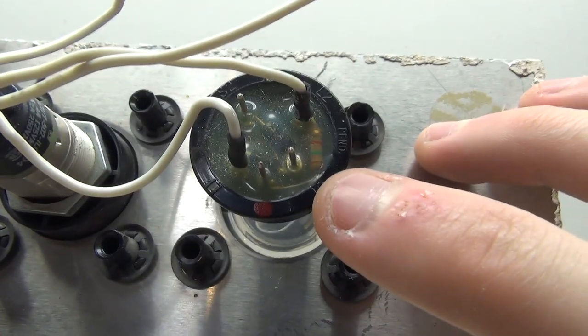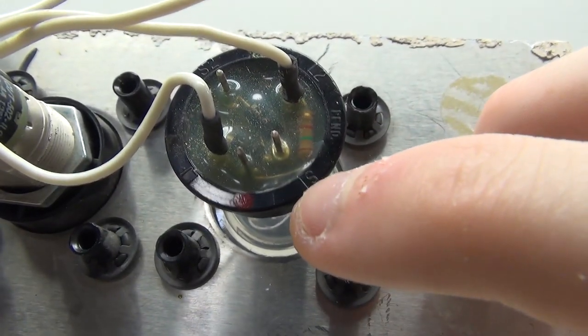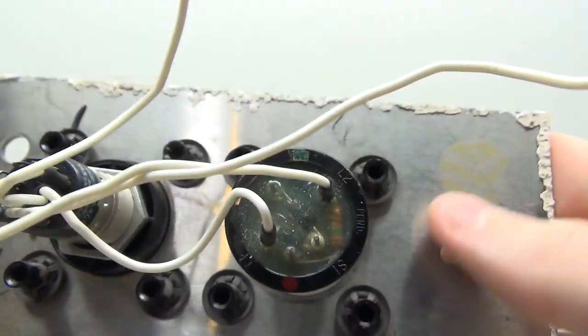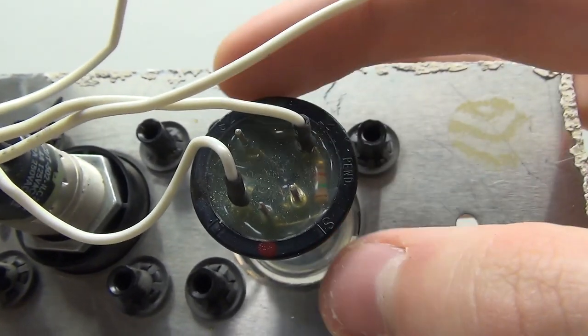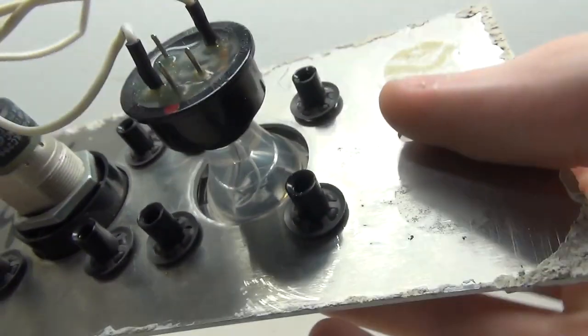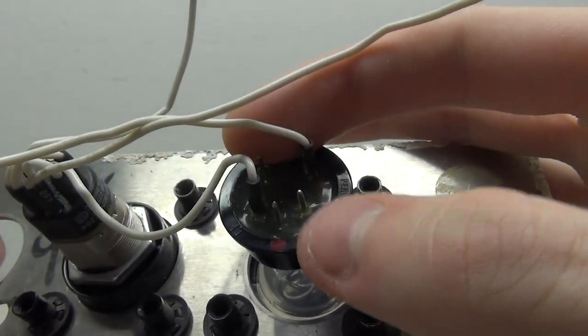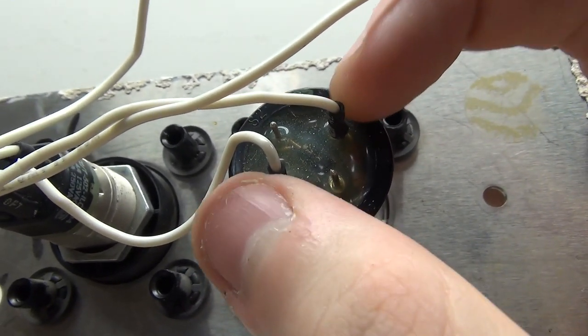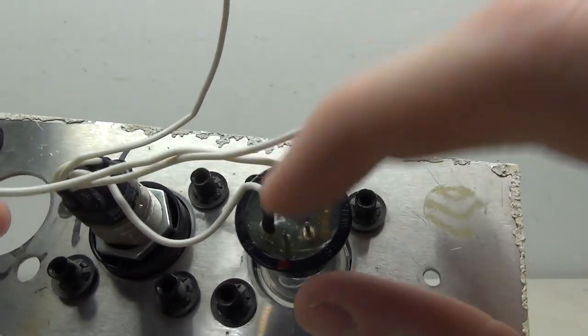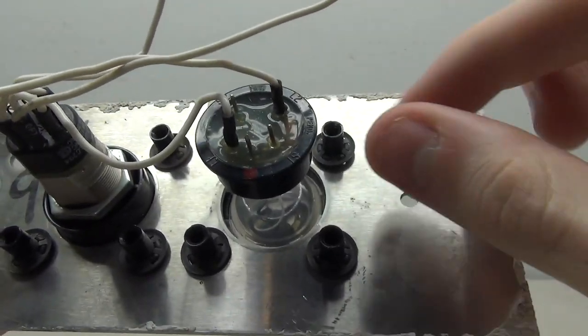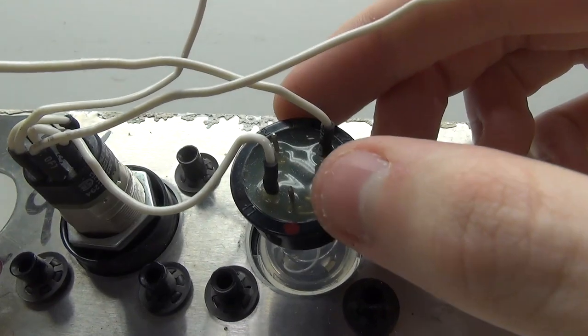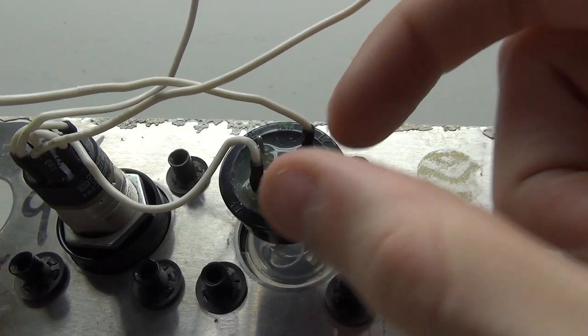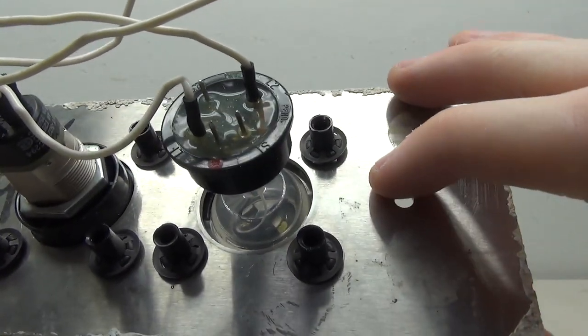On the back here we have these little pins, each with a corresponding letter and number - S1, L1, L2, S2. S2 and S1 are for the switch, so when you push the button in that's what is completed. L2 and L1 are for the light. This whole thing is 24 volts. For wiring we'll be using S1 and S2 for the switch part and then L1 and L2 for the light part.